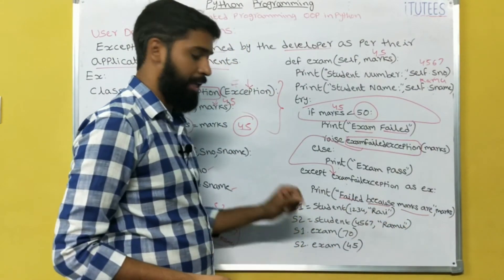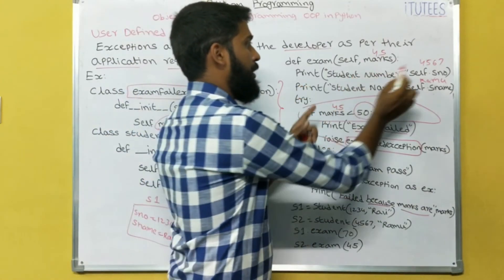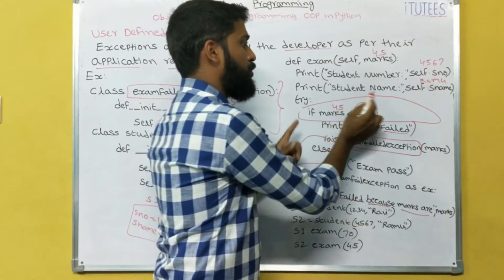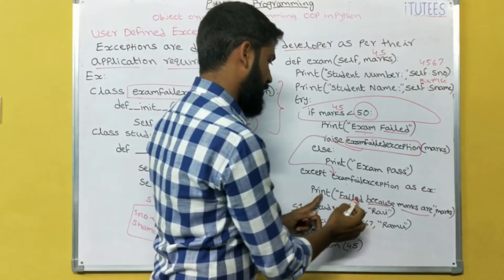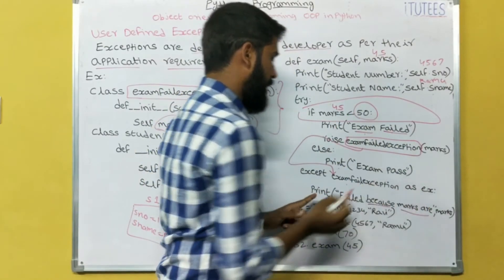What is the output for S2.exam(45)? Student number 4567, student name Ramu, exam failed, failed because marks are 45.